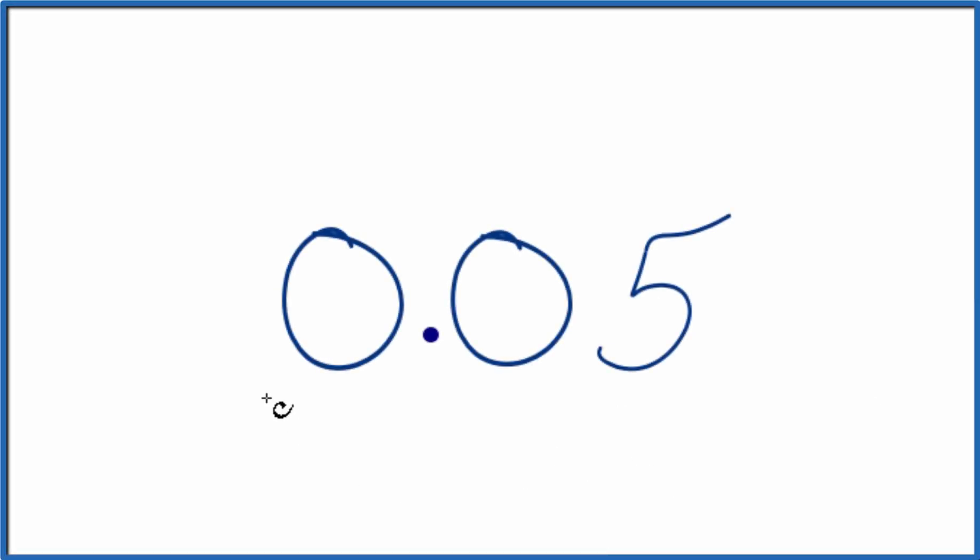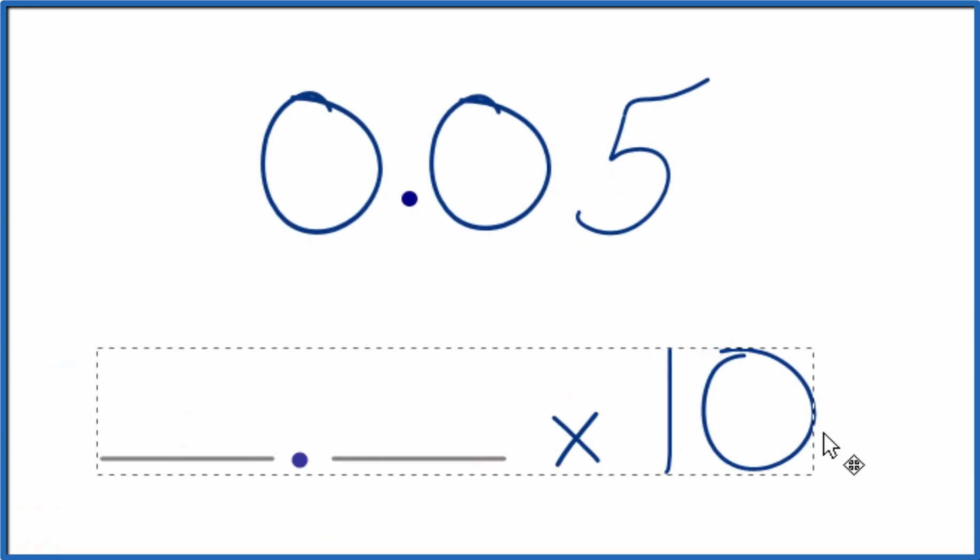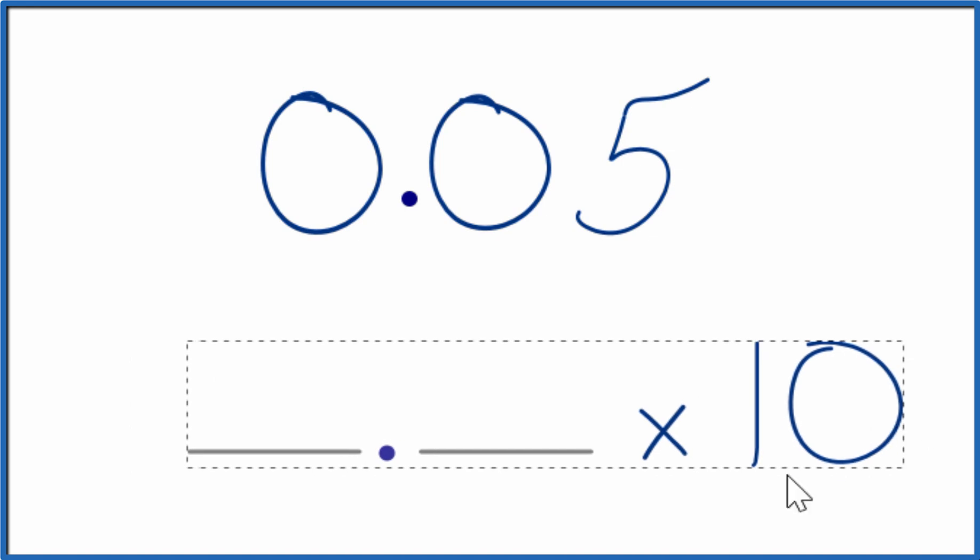In this video we'll write 0.05 in scientific notation. What we want to do is get it in this format right here, so we'll have our whole number, a decimal, times 10 to some power.